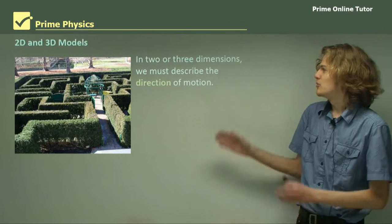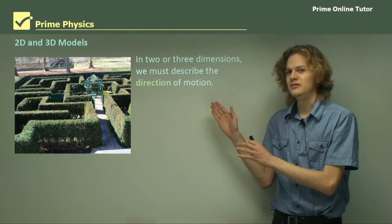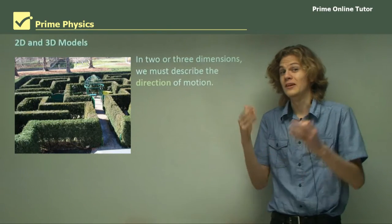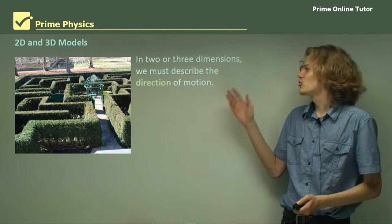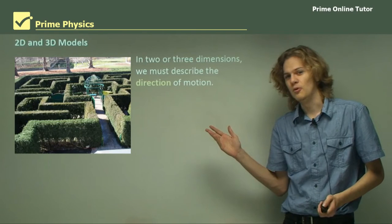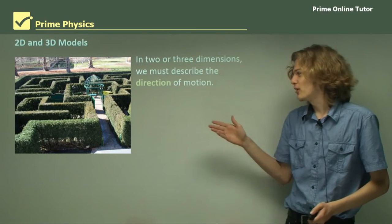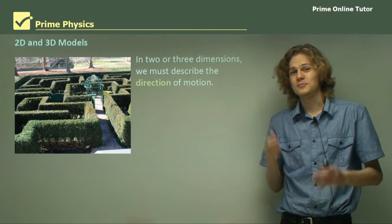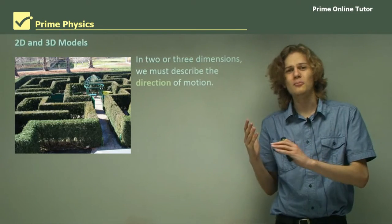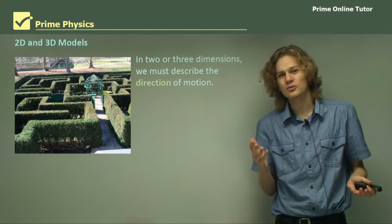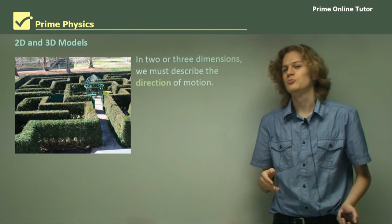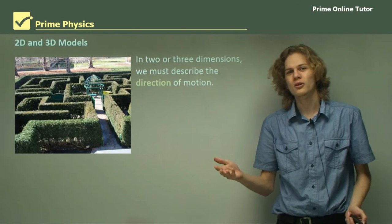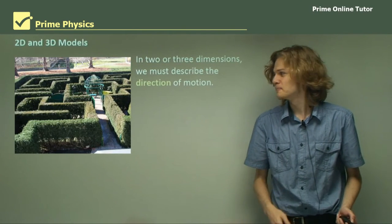Now in two or three dimensions — so in the real world — we have to describe the direction of the motion. If you're trying to get through a maze, for example, using just positive and negative numbers won't really help you, because you have to move in all four cardinal directions.